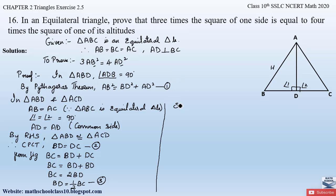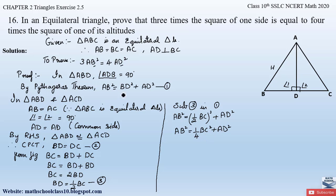Substituting equation 3 into equation 1: AB² = (BC/2)² + AD². This gives AB² = (1/4)BC² + AD². Since triangle ABC is equilateral, AB = BC. Substituting BC = AB: AB² = (1/4)AB² + AD².